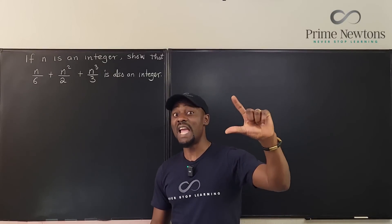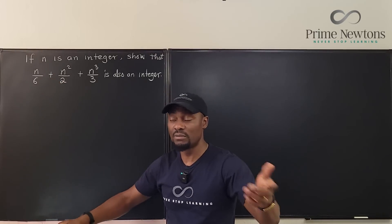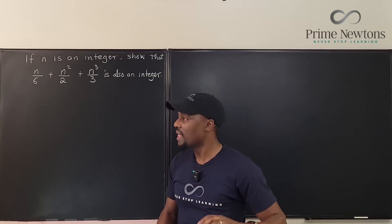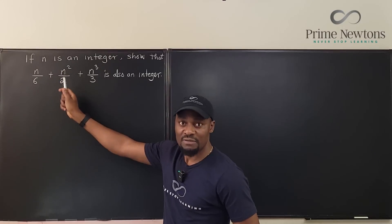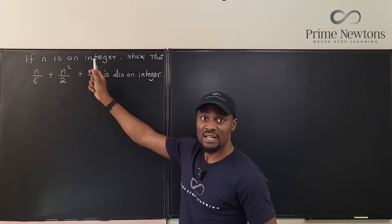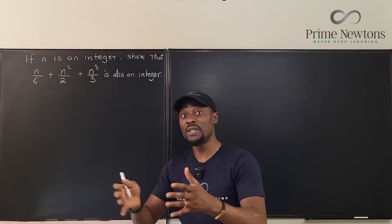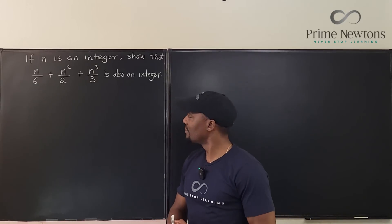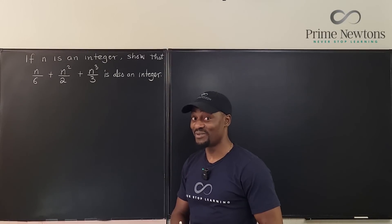If you take any integer n, whether positive or negative or zero, and you divide it by six, then square it and divide by two, then cube it and divide by three, and you add all those answers together, what you will always get is also an integer. It's true, let's get into the video.